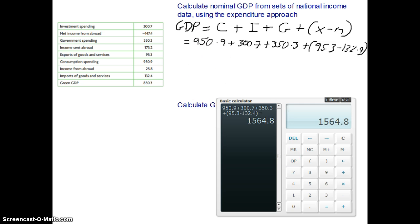So as you can see, I've put all the figures here, popped them in my calculator, added them together, and I get a GDP of 1564.8. It's as simple as that.